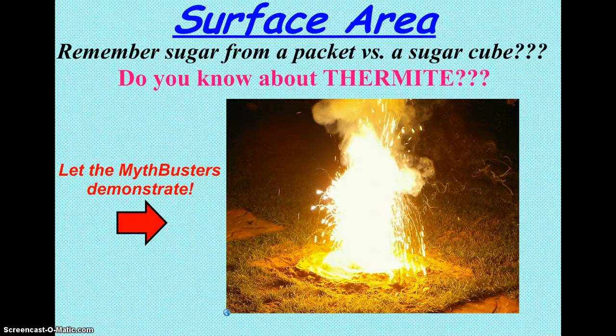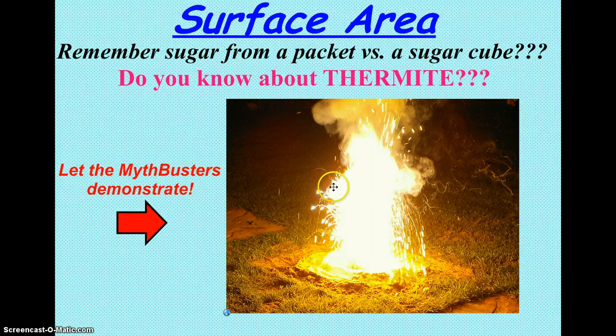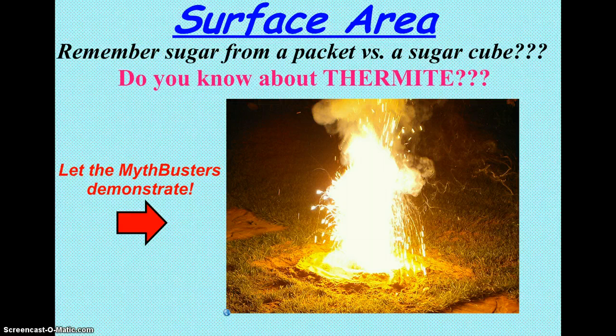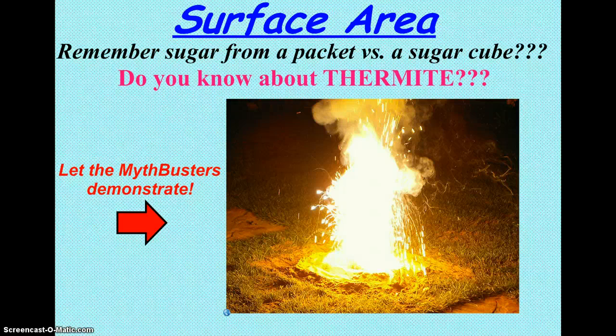Surface area. We talked about this when we were dissolving sugar from a packet versus a sugar cube. If we smash down our reactants into the smallest particles possible, that means there's a much higher amount of surface area in which these collisions can occur. Thermite, if you've ever heard of thermite. That is powdered aluminum and powdered iron 3 oxide. And when you have these powdered solids, you can get quite an explosive reaction. Here's a little snippet from a Mythbusters showing just how explosive a thermite reaction can be.